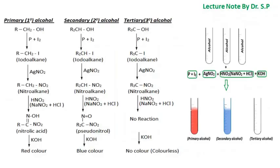This is the chart containing all the reactions and procedures for the detection of primary, secondary, and tertiary alcohol. From this figure we can also see that the red color indicates primary alcohol, blue color indicates secondary alcohol, and there is no coloration for tertiary alcohol.